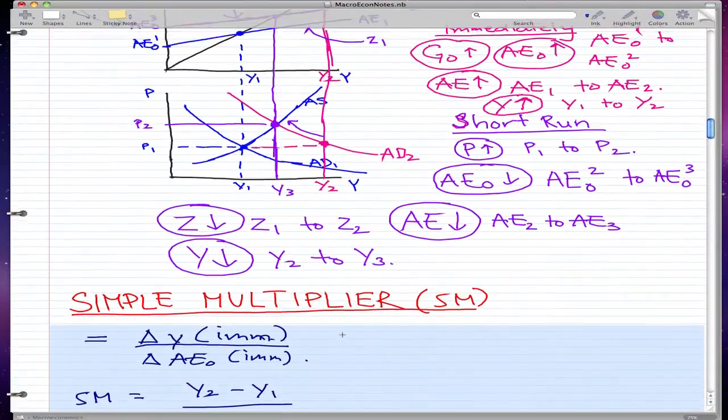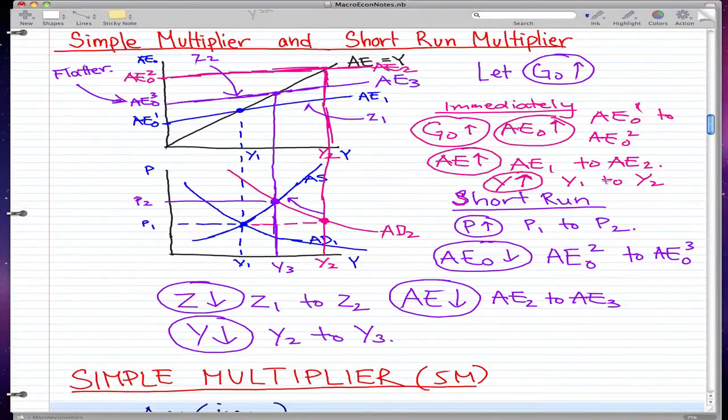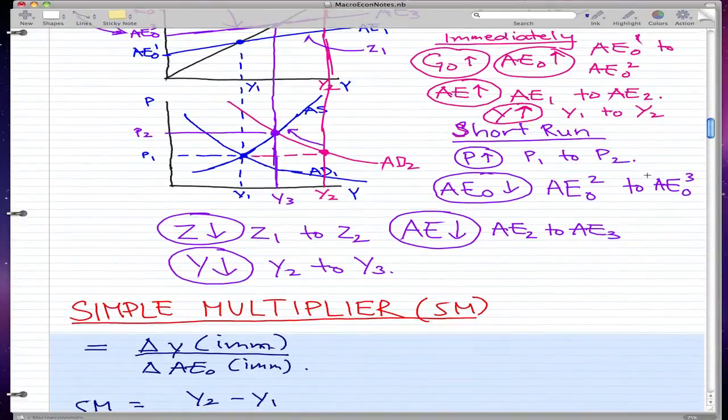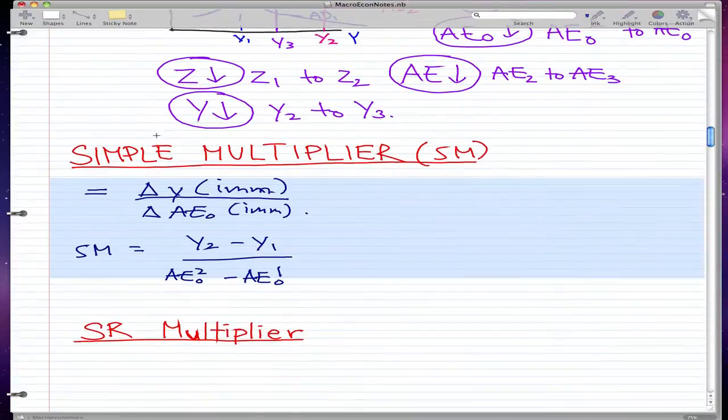And this is apparent in the graph that we did in the last video. See that there was actually a change in y1 to y2, and there was actually a change from AE not 1 to AE not 2. So pretty much what we're taking is, for this graph, we're taking AE not 2 minus AE not 1. And before that, we're taking y2 minus y1.